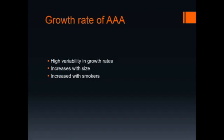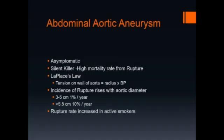Abdominal aortic aneurysms increase in size with time. There is high variability in growth rates, and the rate of growth increases as the aneurysm grows. The growth rate is increased in smokers. Abdominal aortic aneurysm has been called the silent killer because it is asymptomatic and can rupture suddenly, resulting in high mortality.